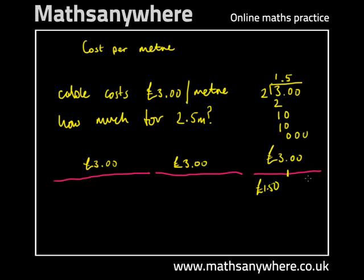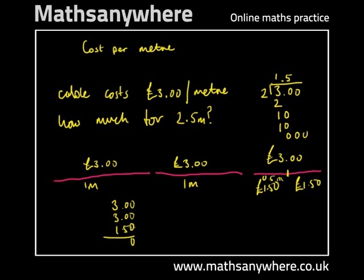So we know that three pounds divided by two, or cut in half, is one pound fifty for half a meter. So that's one meter at three pounds, another meter at three pounds, and half a meter at one pound fifty. Add those together: three pounds plus three pounds plus one pound fifty — the answer is seven pounds and fifty pence.